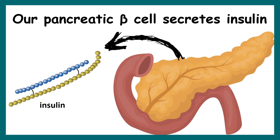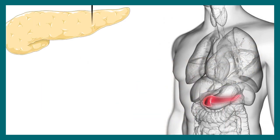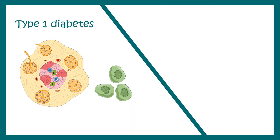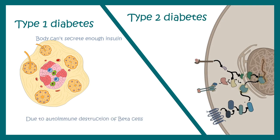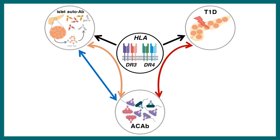If pancreatic beta cells are dying, insulin levels would be low. There is also type 2 diabetes, where the body becomes resistant to insulin — meaning the body cannot respond to insulin. In type 1, the body cannot secrete insulin due to destruction of the source; in type 2, even if insulin is present, the body cannot respond to it. Our focus in this video is type 1 diabetes.